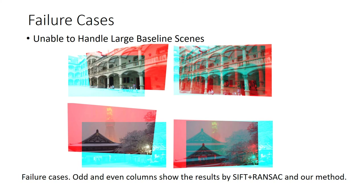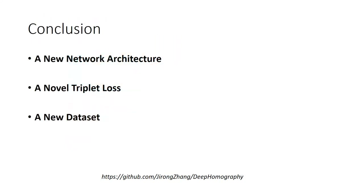At the end of this talk, we show the failure cases of our method. Our method is only designed for small baseline scenes. For large baseline scenes, our network loses its alignment power because the receptive field is of limited size. In this case, traditional methods still work, and we leave the large baseline solution as future work. In summary, we presented our ECCV work: a new unsupervised homography estimation approach involving a new network structure, a novel triplet loss for unsupervised training, and a new dataset covering different scenes. Our method achieves superior performance compared with state-of-the-art methods, and we hope it can inspire more works in the research community.